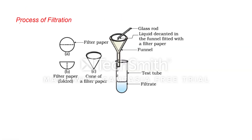Now, the process of filtration. If we have any liquid mixture, how can we separate the components? We take a filter paper in a circular shape. First, we fold it to make it two-fold. Then this filter paper is again folded to make it four-fold. This four-folded filter paper is then converted into a cone shape.